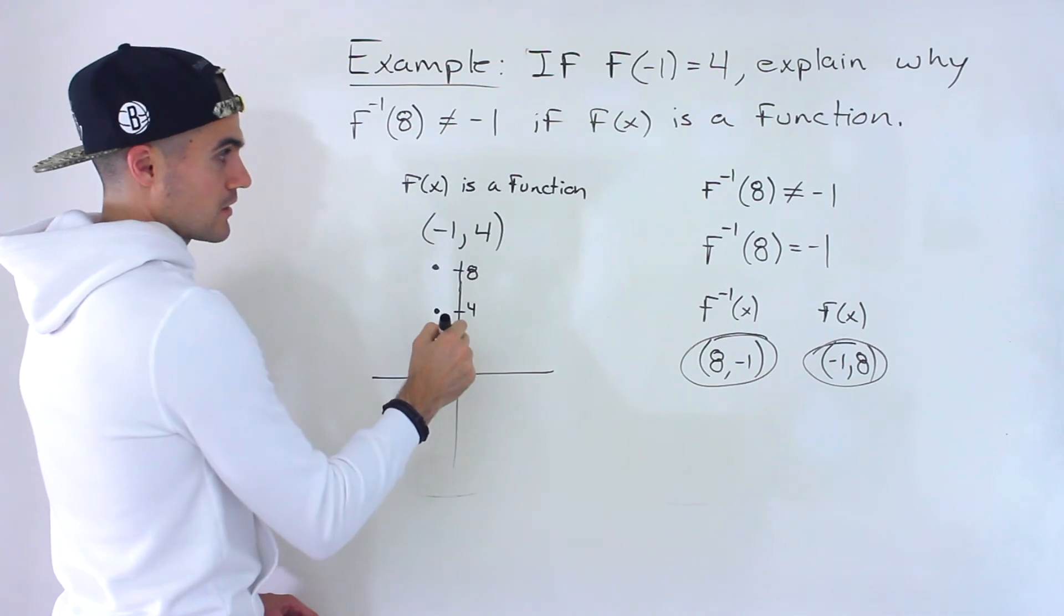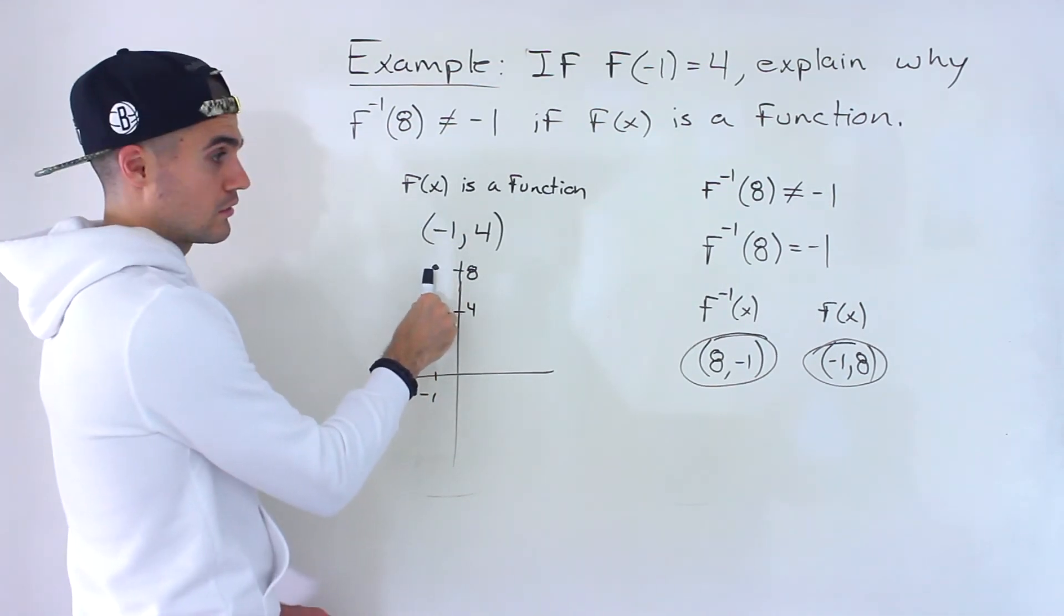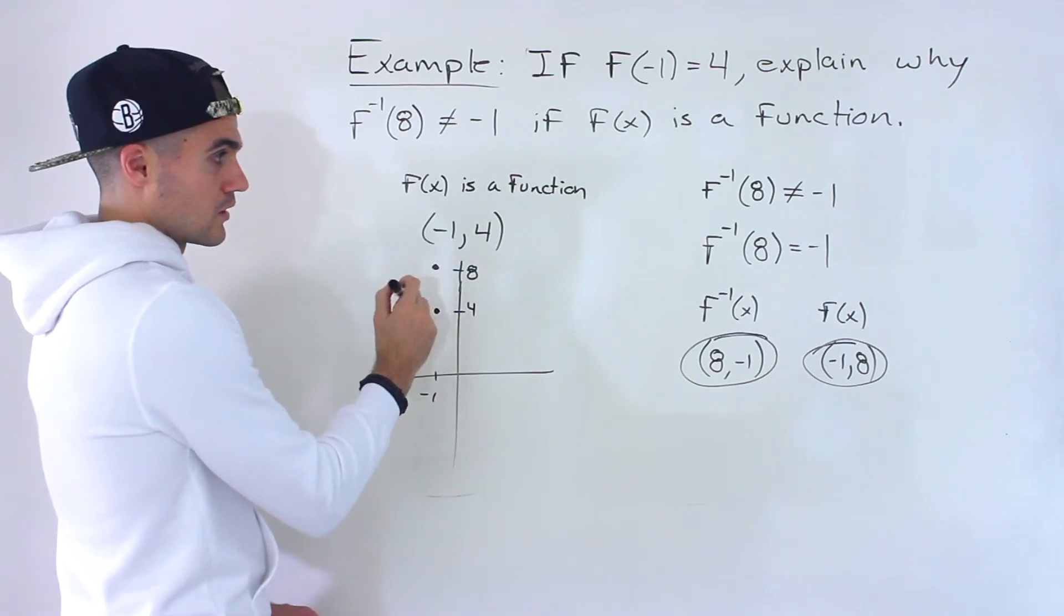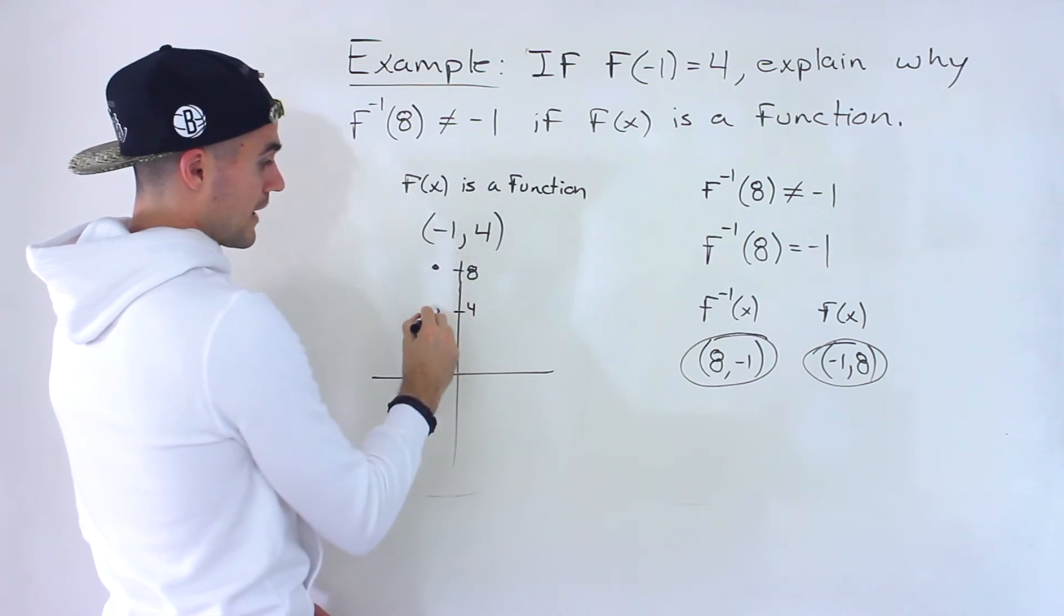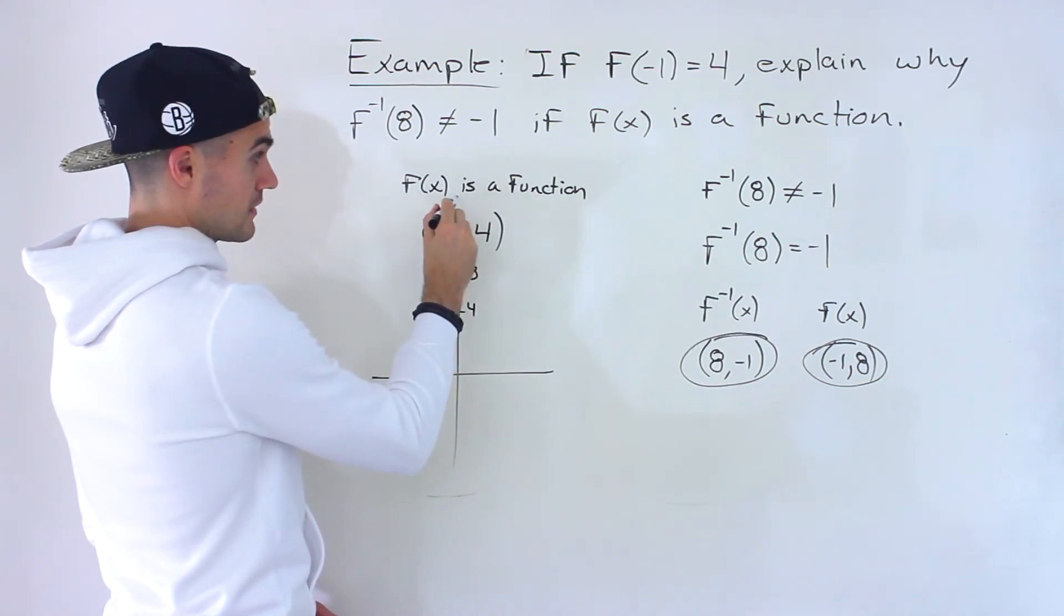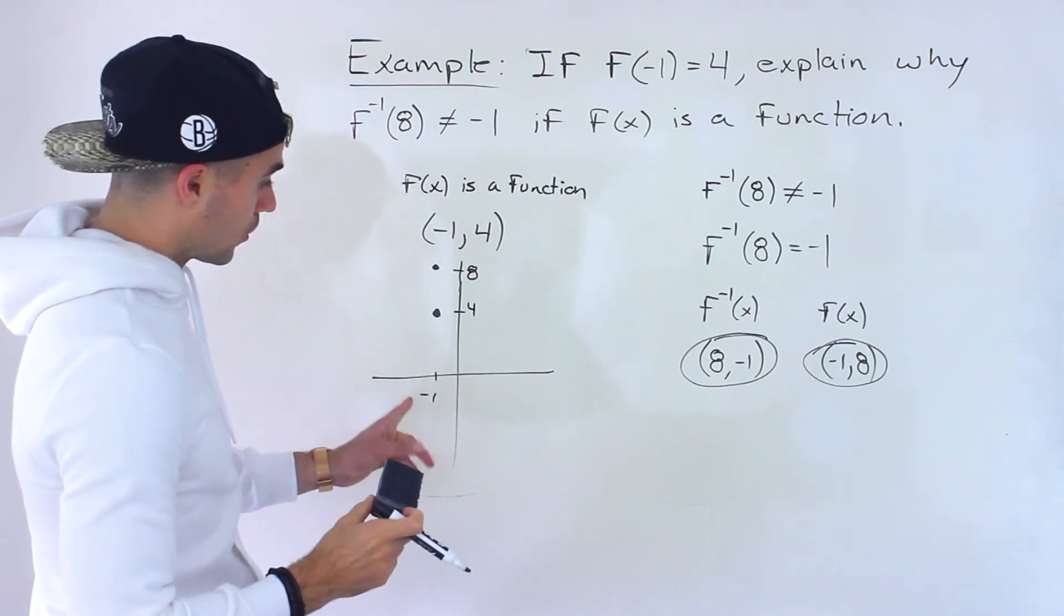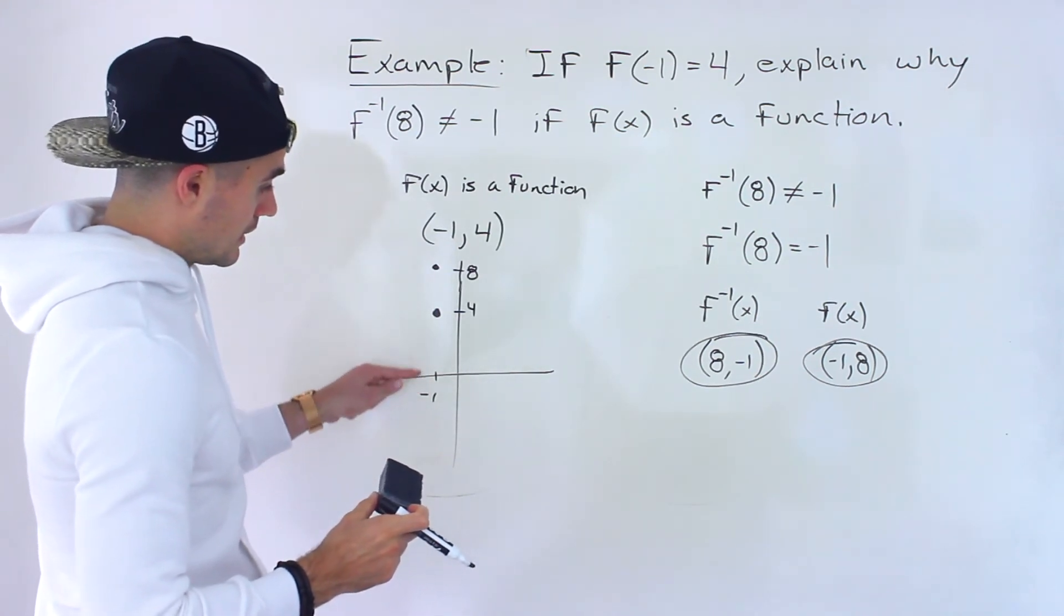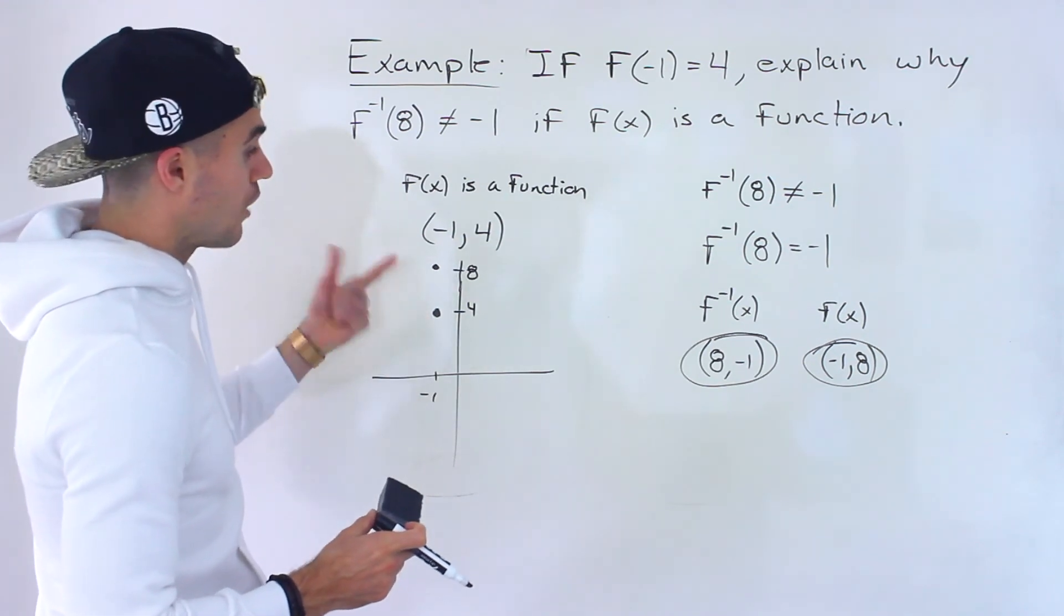Notice that that cannot happen if f of x is a function, because then it would fail that vertical line test. So if negative 1 and 4 exists on the function f of x, and it's a function, then there's actually no other coordinate that can have an x value of negative 1 with a y value other than 4.